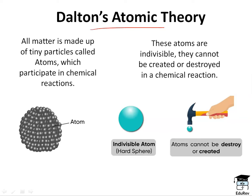Next came Dalton's atomic theory. Dalton was the first scientist to give a proper theory on atoms and the existence of atoms. He was able to provide some scientific evidence for the postulates he proposed. The first postulate was: all matter is made up of tiny particles called atoms. The entire matter is made up of tiny, indivisible particles called atoms — the food you eat, the water you drink, the sofa on which you are sitting — everything is made up of atoms.